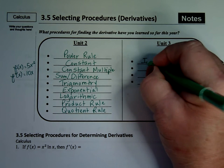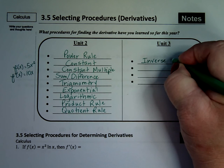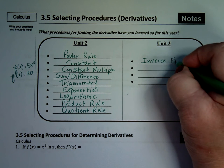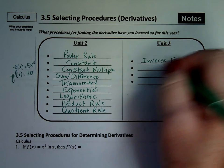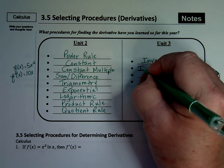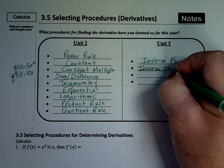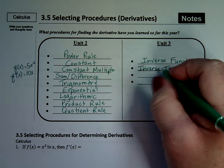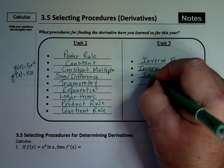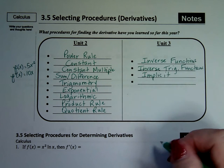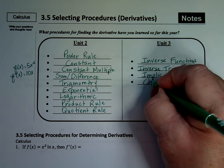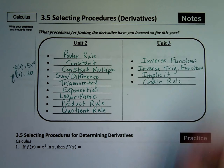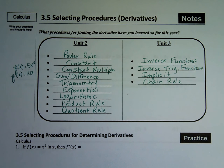In Unit 3, we learned the inverse rule, inverse functions, which led us to inverse trig functions, those are those fraction ones, we learned implicit, that's x's and y's, and you've got different variables going on, and we also learned the lovely chain rule. So there are all the different types of derivative rules and equations that we've learned throughout this.